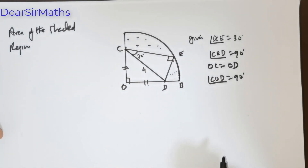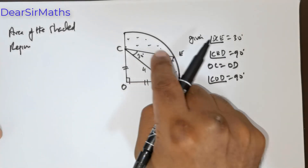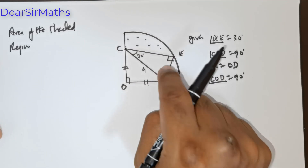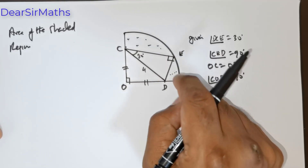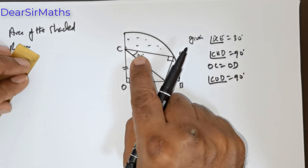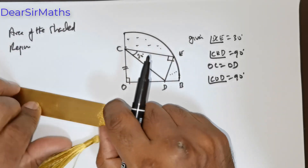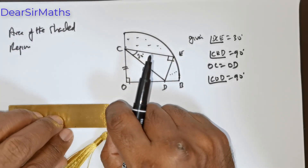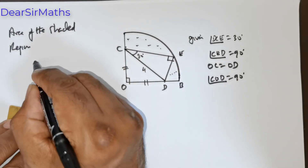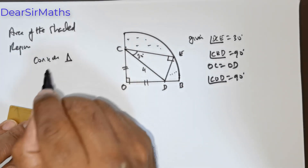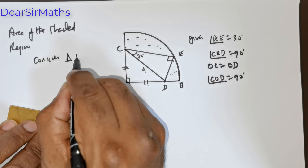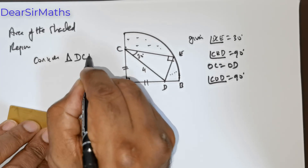Now foremost, what I am going to do is I will be considering this triangle DCE. Over here it is 90 degrees, so what I wish to do is consider triangle DCE.